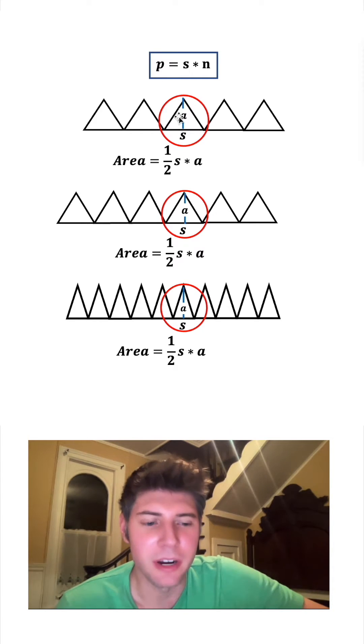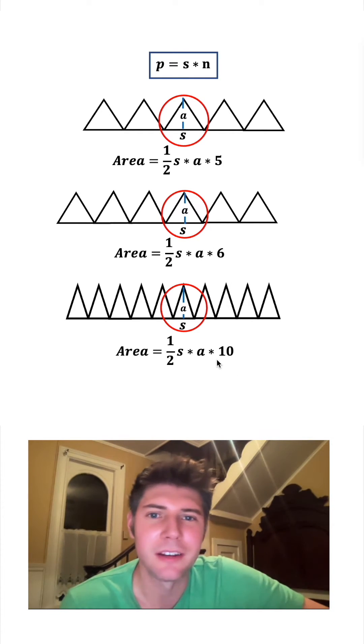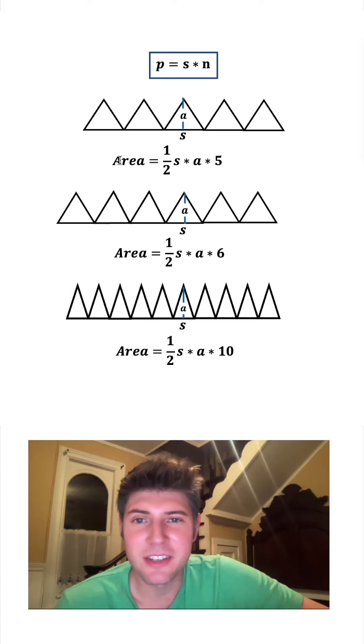This is the area of one of the triangles, so if we multiply it by five, we'll get all five triangles. Or if we multiply it by six, or if we're down here, we multiply it by ten. Now we don't need these circles anymore. This is the area of all five of these, this is the area of all six of these, this is the area of all ten of these.